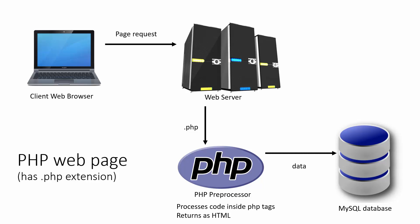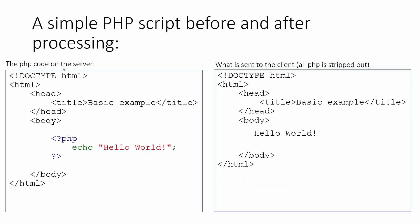If any database access is required, the preprocessor takes care of that and gets the data from the database — potentially MySQL. It then strips out any PHP code and returns HTML to the web server, which returns it to you. Here's an example of a PHP script before and after processing: on the server it looks like HTML but with a PHP section saying hello world, but when returned, the source shows no PHP tags — hello world is simply in the body because that's where the PHP echo statement was. What's nice is that users can't just look at your logic and things.